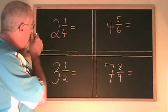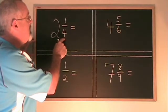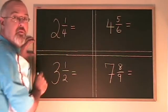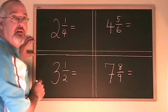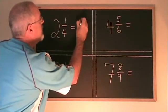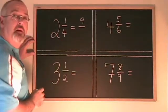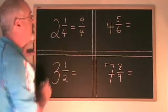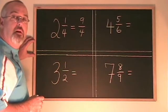Let's try it. Big number 2 times denominator 4 gives 8 plus numerator 1 gives 9. Our new numerator is 9. The new denominator is the same. It's a 4. 2 and a quarter is equal to 9 quarters.